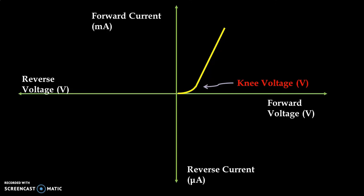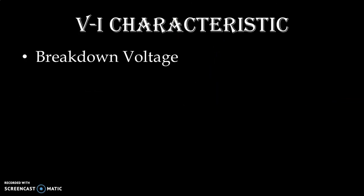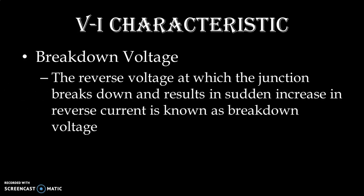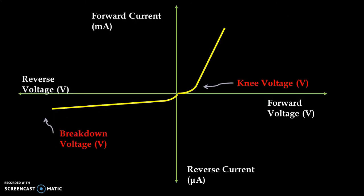When we apply voltage in reverse condition, in the third quadrant, the current is in microamperes — very less — and it is independent of the applied voltage but dependent on temperature. The reverse voltage at which the junction breaks down and results in a sudden increase in reverse current is known as breakdown voltage. After the reverse voltage reaches the breakdown level, the junction breaks down and very high current passes through the PN Junction Diode.